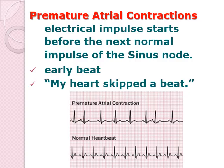Let's talk about your premature atrial contractions. As the term implies, premature means the contraction or electrical impulse has started before the next normal impulse of the sinus node. Hence, it is referred to as the early beat. Oftentimes, the patient will say that their heart skipped a beat. Your concern here in premature atrial contraction is because of the enhanced automaticity of your atrium, which causes an electrical impulse to start before the next normal impulse should be.